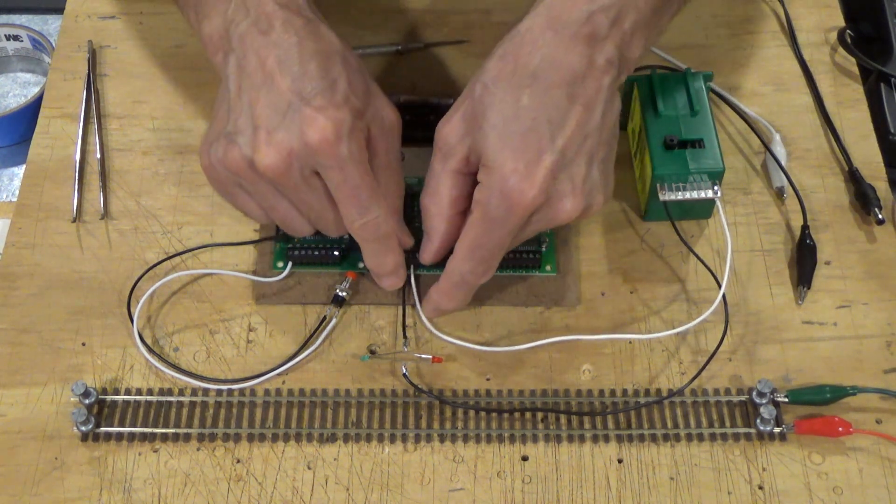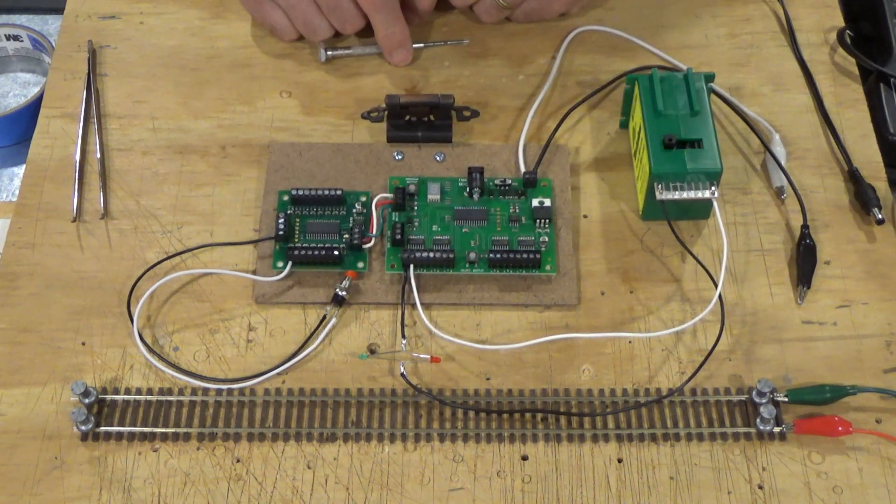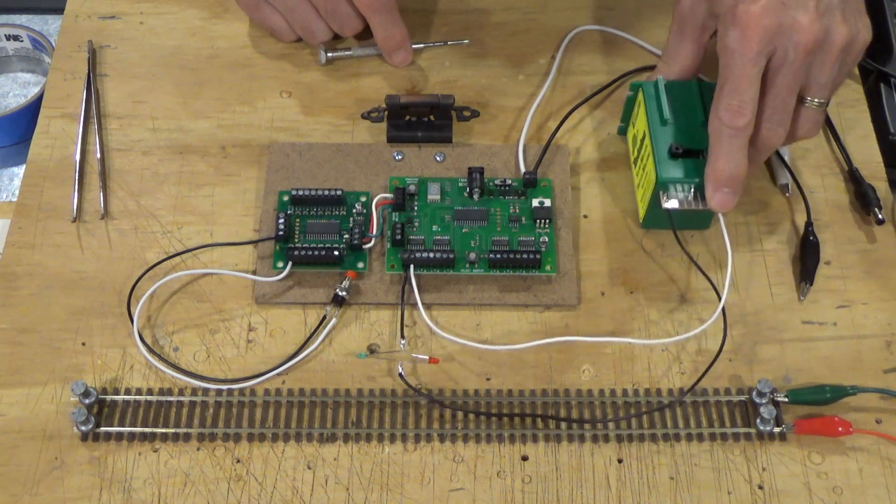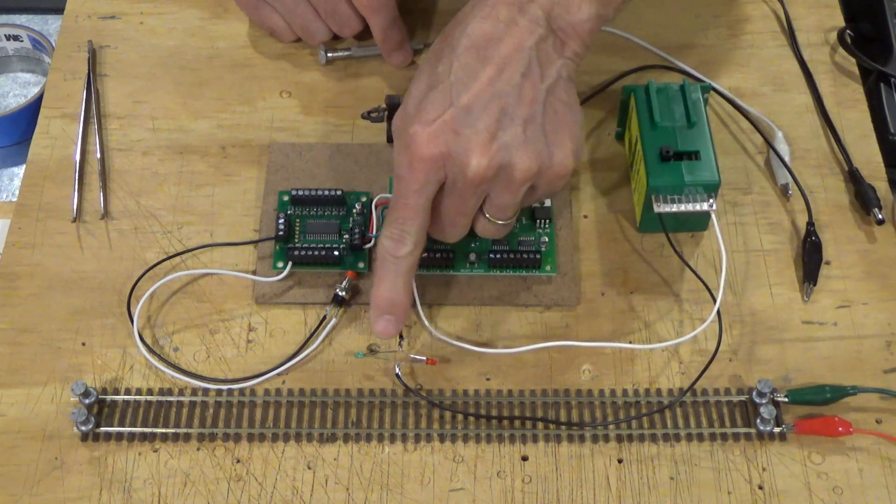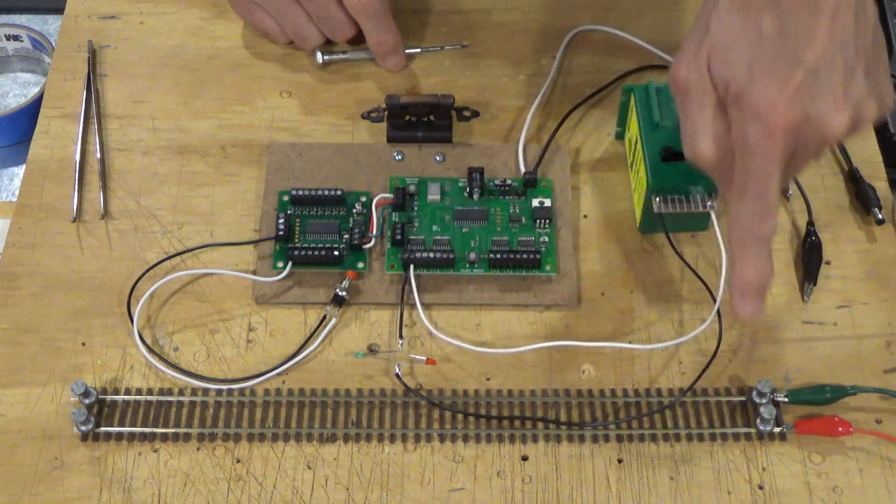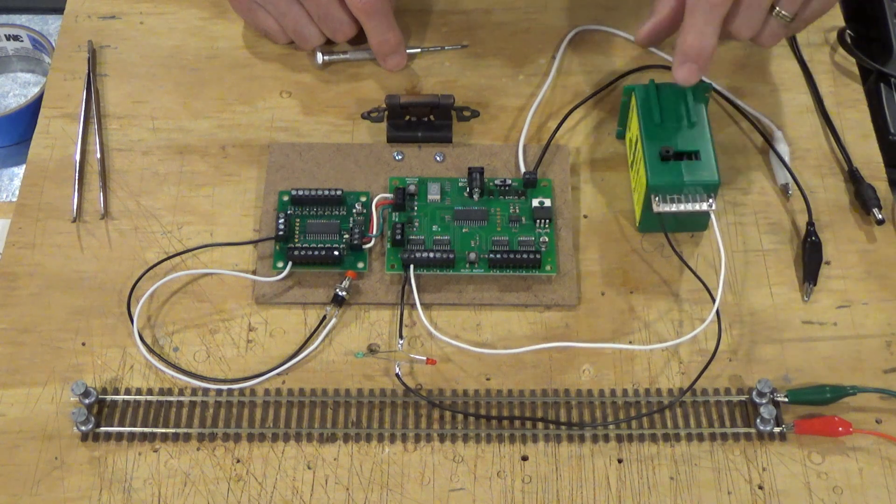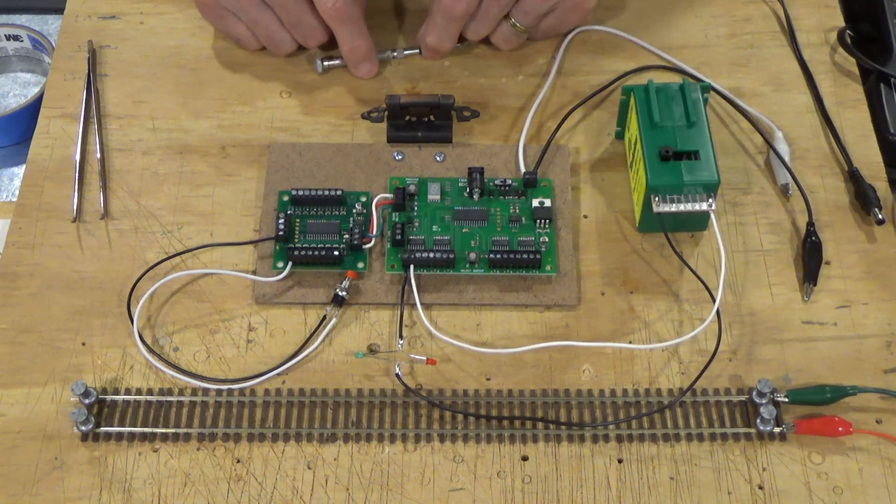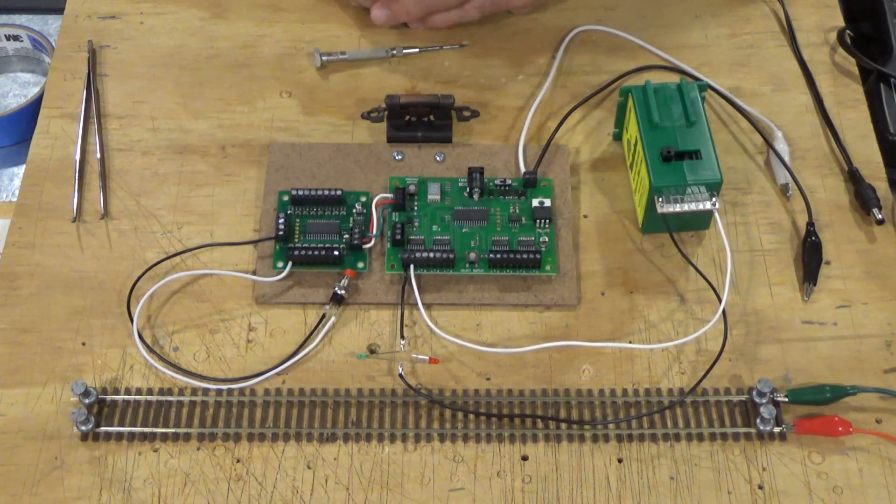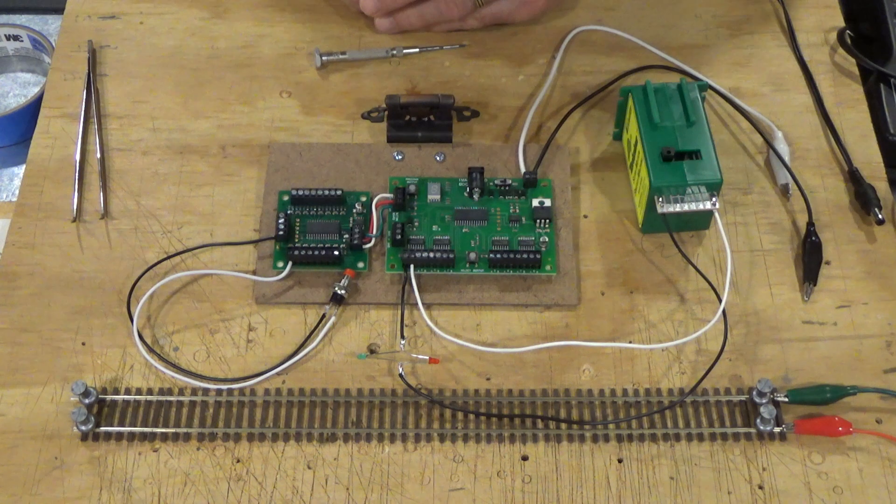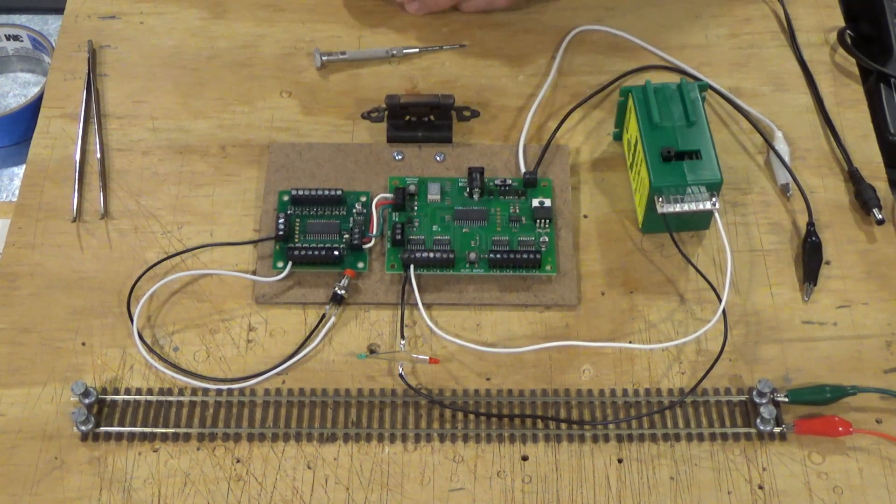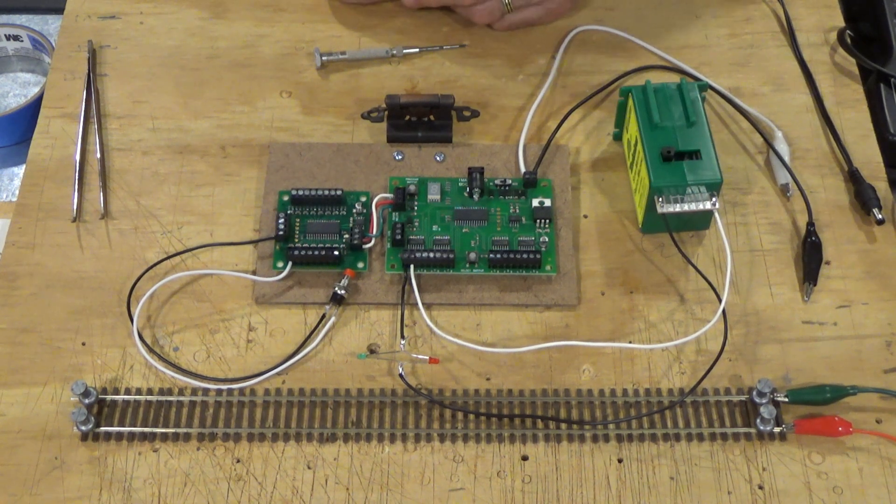Over here on this side, on the output from position 1, I've got one wire going directly to a tortoise switch machine here. The other wire goes through a pair of LEDs, the green and red LED, and then on to the other leg of the motor contacts on the tortoise switch machine. Now these two LEDs are wired the same way I showed you how to wire them on the control panel. So I'll just put this in here to show you the red and the green shift in polarity when we toggle the switch 8.